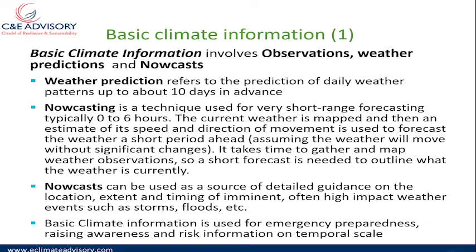It takes time to gather and map weather observations, so a short forecast is needed to outline what the weather is currently. Nowcasts can be used as a source of detailed guidance on the location, extent, and timing of imminent, often high-impact weather events such as a storm or a flood. Basic climate information is used mostly for emergency preparedness, raising awareness, and risk information on a temporal scale.